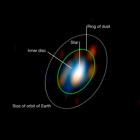An astronomical interferometer is an array of separate telescopes, mirror segments, or radio telescope antennas that work together as a single telescope to provide higher resolution images of astronomical objects such as stars, nebulas and galaxies by means of interferometry.